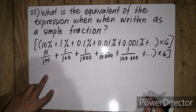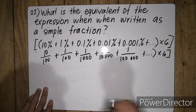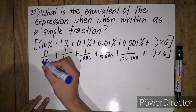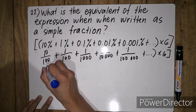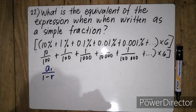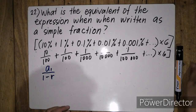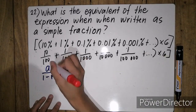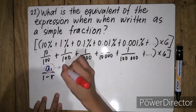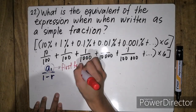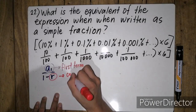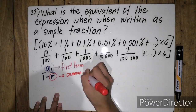Ang formula natin to determine the sum of an infinite geometric sequence is simply a sub 1 over 1 minus r, where a sub 1 is our first term and r is the common ratio.